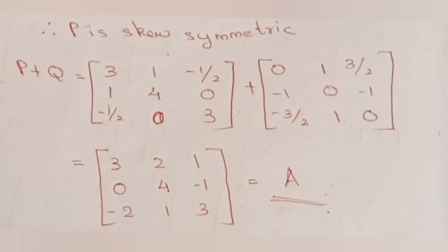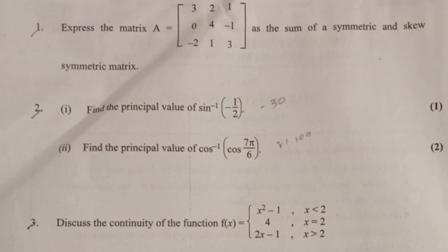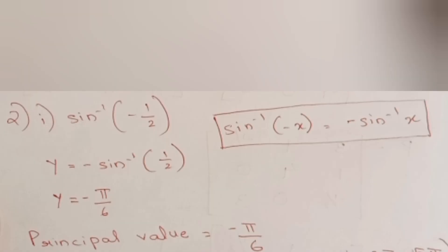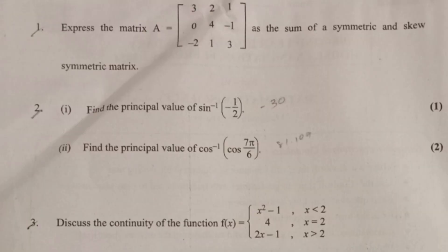Find the principal value of sin inverse of minus 1/2. Answer: sin inverse of minus x equals minus sin inverse x. So y equals minus sin inverse(1/2), which gives y equals minus pi by 6. Therefore the principal value equals minus pi by 6.